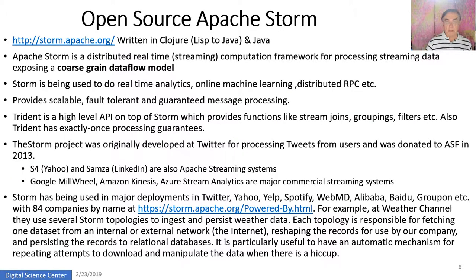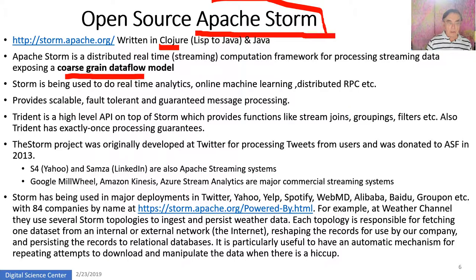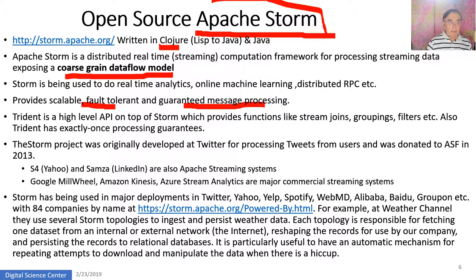Apache Storm is the core system — Heron has really not changed a lot, just cleaned up and improved. It's written in Clojure, which is a Lisp-to-Java system, and it exposes a coarse-grained data flow model. It does real-time analytics, online machine learning, and distributed or remote procedure calls. It is fault tolerant, has guarantees in its messaging, and is scalable to very large systems. There is also a project called Trident on top of Storm which has various operations such as joins and filters.